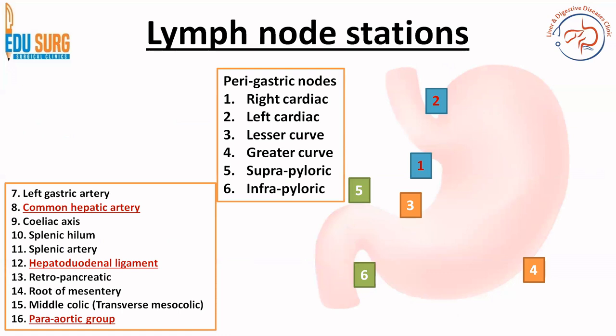Now going to lymph node stations — this is a very important topic when you are planning surgeries for carcinoma stomach and you have to know which lymph nodes to remove in which type of surgery. We have a separate video on D1/D2 gastrectomy. Basically in lymph node stations, there are two parts: the perigastric nodes which are easier to remember, and the other nodes from 7 to 16. These are very important nodes when you want to understand the staging of carcinoma stomach as well as planning surgeries. The common hepatic node, the hepatoduodenal ligament node, and the paraaortic group are commonly asked questions in exams.